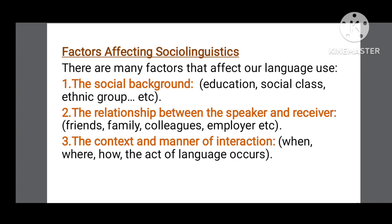There are many factors that affect our language use. The first one is social background, which includes our education, our social class, and our ethnic group. The second factor is the relationship between the speaker and the receiver, which includes our relationship with friends, family, colleagues, employer, employee, and so on. The third factor is the context and manner of interaction, which includes to whom we are talking, when and where we are talking, and what the topic of discussion is.